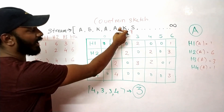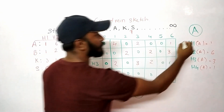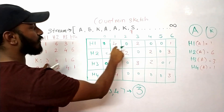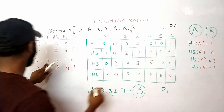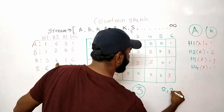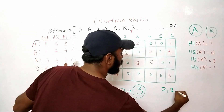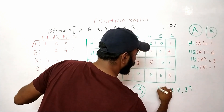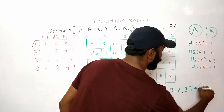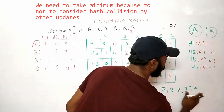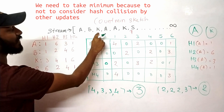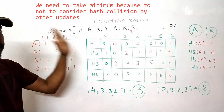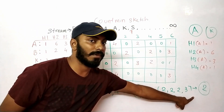Let's run the same case for 'k'. When we hash 'k': h1 gives position 3 — value is 2; h2 gives position 4 — value is 2; h3 gives position 1 — value is 2; h4 gives position 6 — value is 3. The minimum value is 2. Counting 'k' in the stream — that is 2. So it's actually working. We did the count, we calculated the minimum from the sketch — that is Count-Min Sketch. Output: 2.